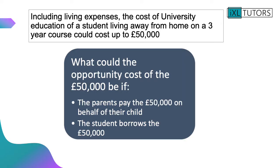This leads us on to a decision you may be considering over the next few years: university education. Including living expenses, the cost of university education for a student living away from home on a three-year course could be up to £50,000. What could the opportunity cost of that £50,000 be — if paid for by your parents or carers, or if you borrowed the £50,000? When answering the second one, consider the student loan and when you'd pay it back. Pause the video to complete both brainstorms.